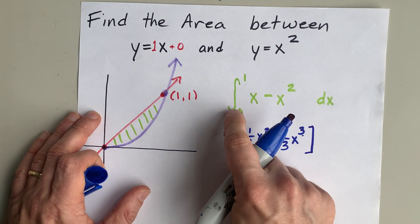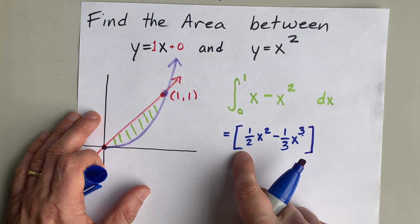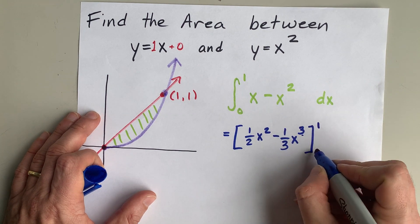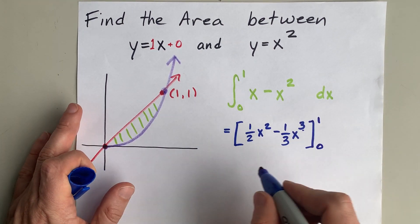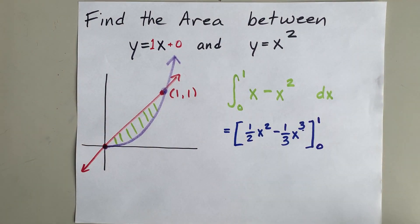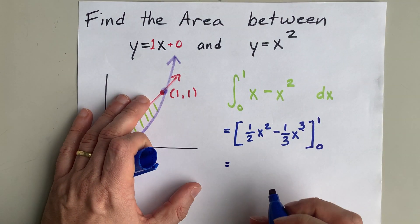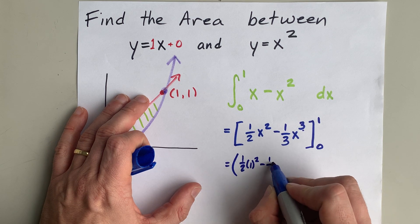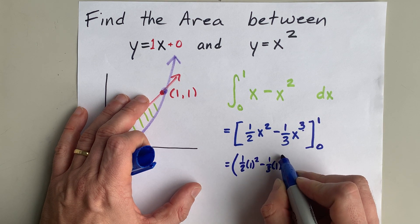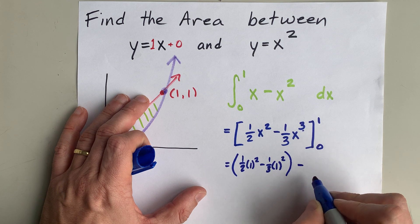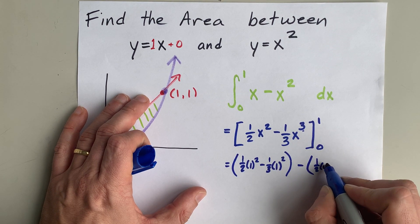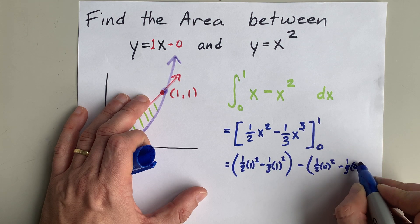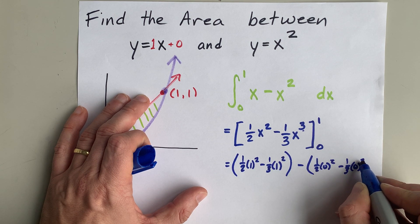Now, I've gotten rid of my integration sign, because I'm going to take this function and evaluate it at 1 and at 0 and then subtract those two functions from each other. So what I have is 1 half of 1 squared minus 1 third of 1 squared less 1 half of 0 squared minus 1 third of 0 to the power of 3.